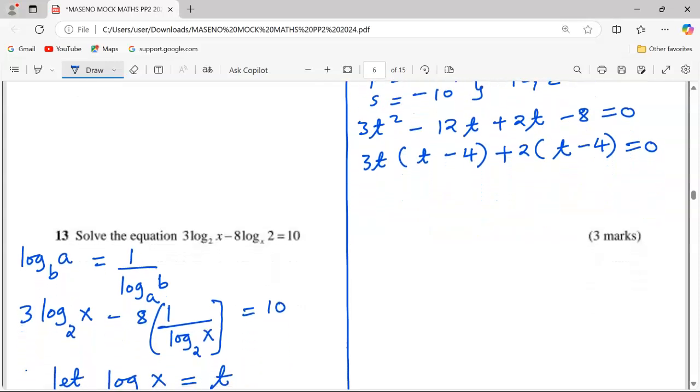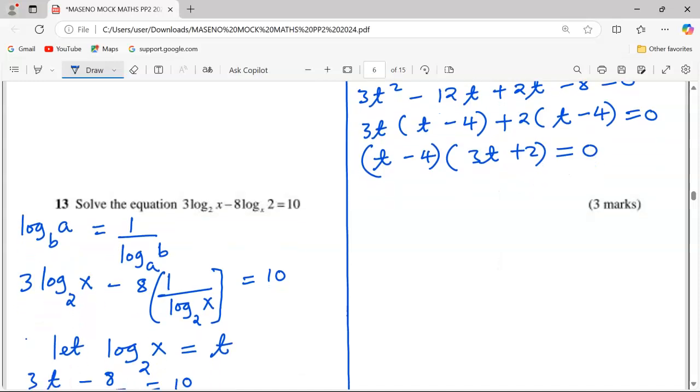At this point, we can pick (t - 4), our common factor, then into (3t + 2) = 0. So the value of t now is going to be, when we use the first factor, t - 4 = 0...